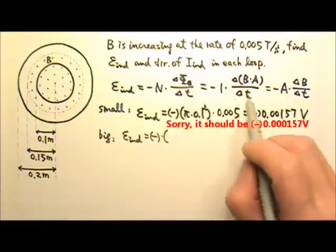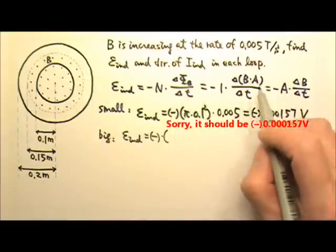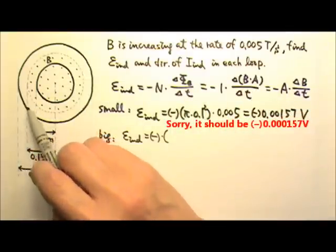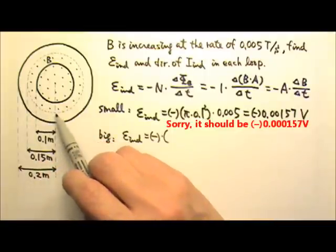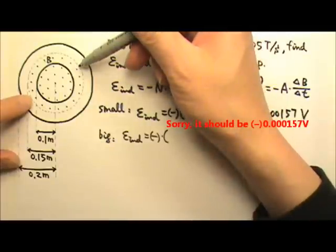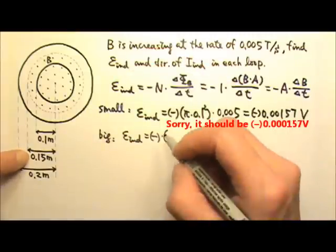Because the area is the area for the magnetic flux. There is no flux in this region. There is only flux in this region. Which means we have to use this radius. The radius for the region with the magnetic field. So we have to use 0.15.